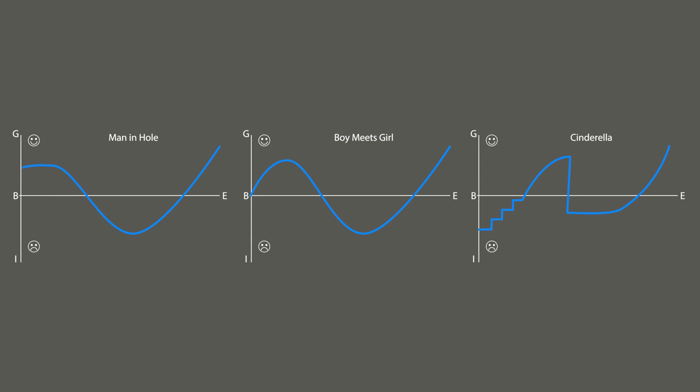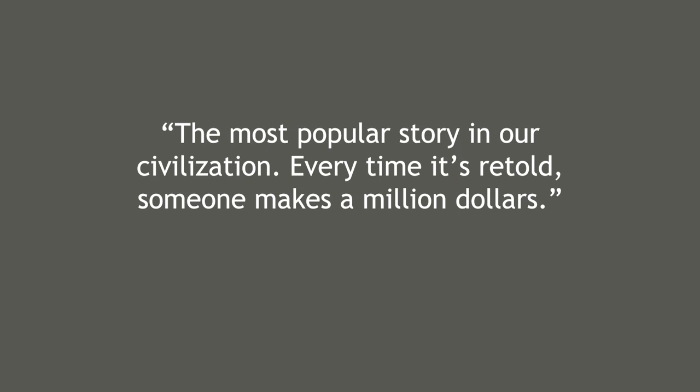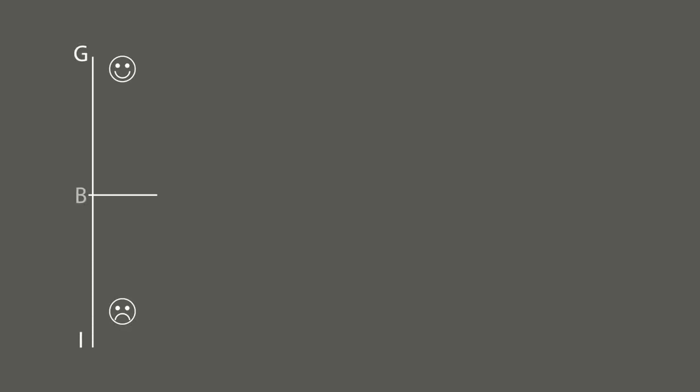As he would often say, those shapes are not copyrighted, and some represent the most popular stories in our civilization. Every time one is retold, someone makes a million dollars. The vertical axis, or GI axis, represents good fortune or ill fortune, and the horizontal axis is the BE axis, representing beginning to end. The simple concept is to draw the emotional change as the story is being told.